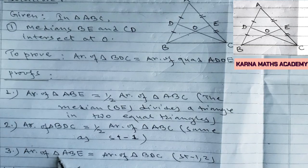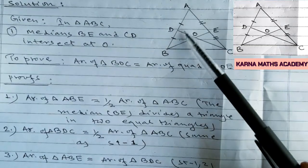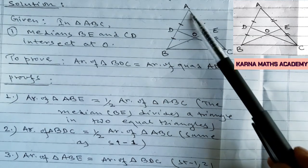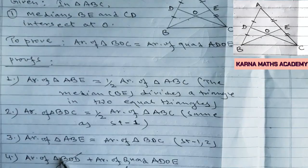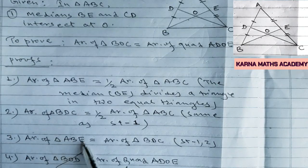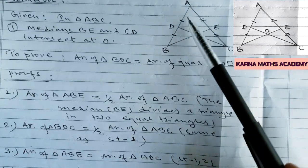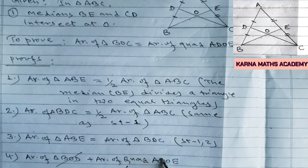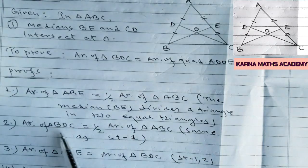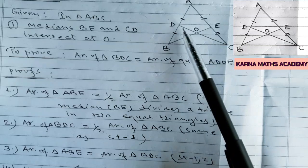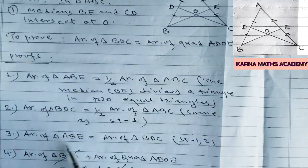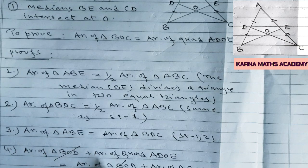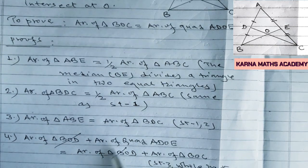Now, in the figure, triangle ABE contains triangle BOD and quadrilateral ADOE. So triangle ABE can be divided into triangle BOD plus quadrilateral ADOE. In statement number 4, triangle BOD divides triangle ABE into two parts: triangle BOD plus quadrilateral ADOE. Similarly, triangle BDC can also be broken down into two parts: triangle BOD plus triangle BOC. Triangle BOD is common on both sides, so we can cancel triangle BOD.